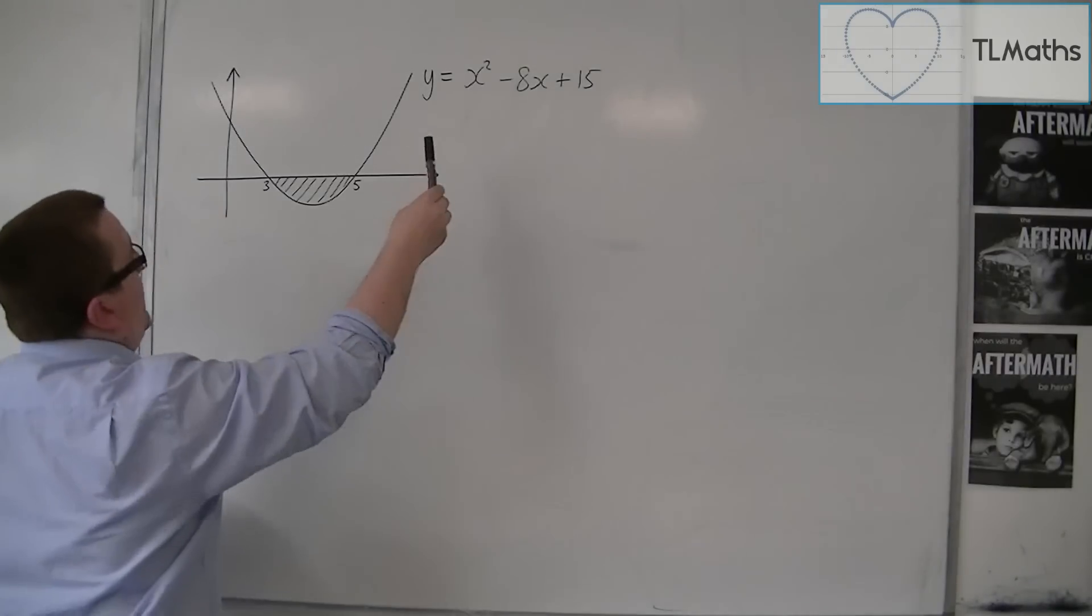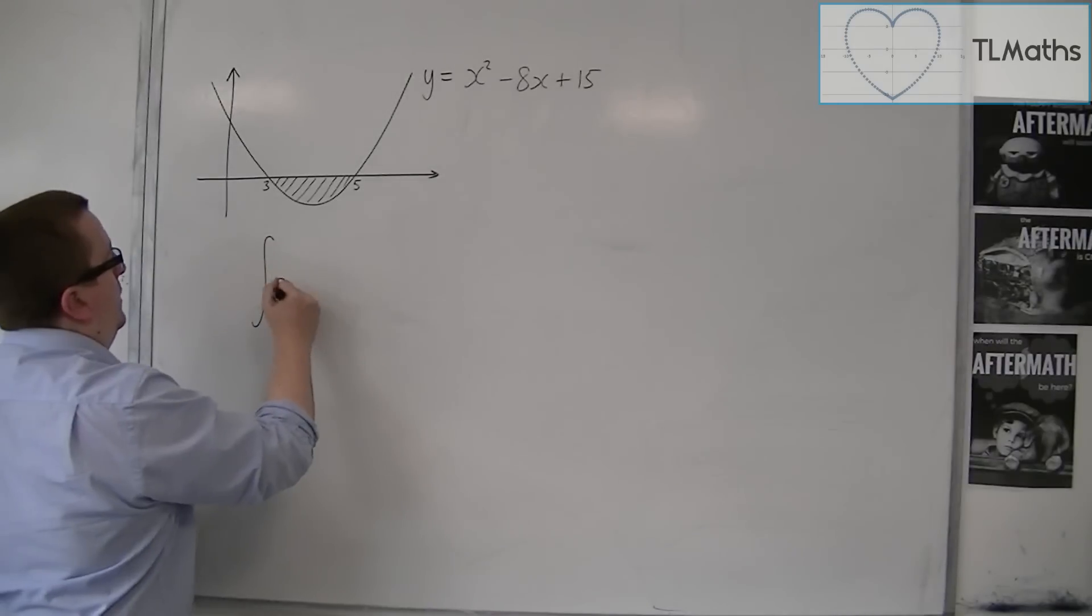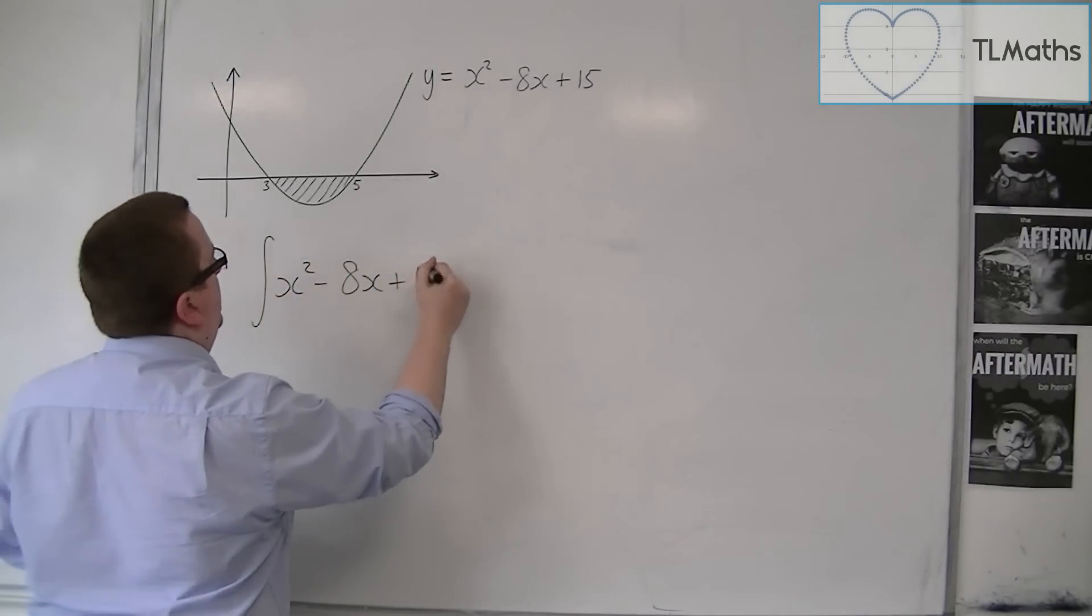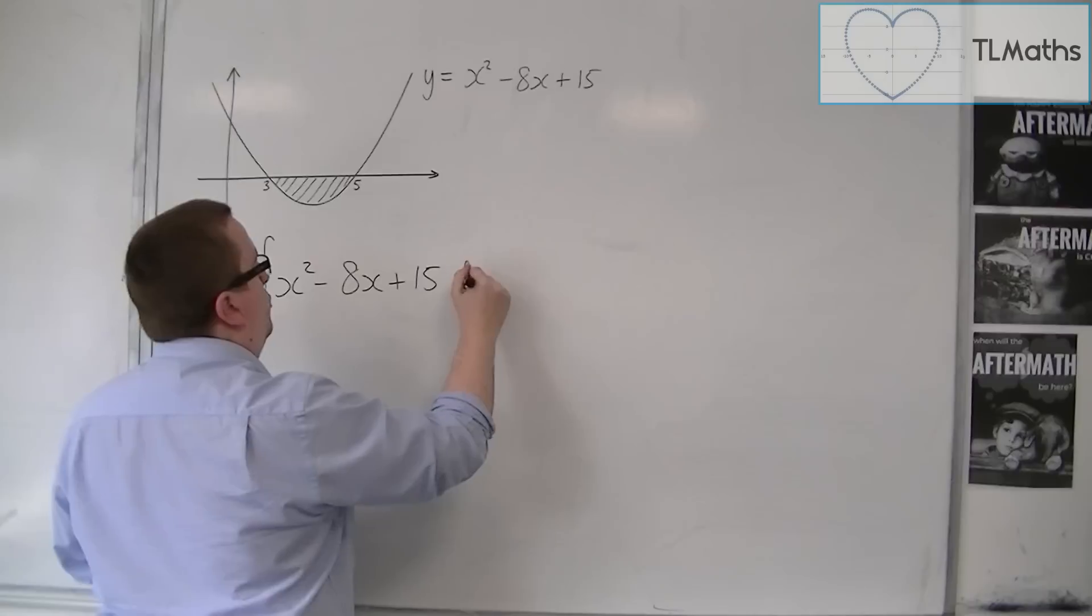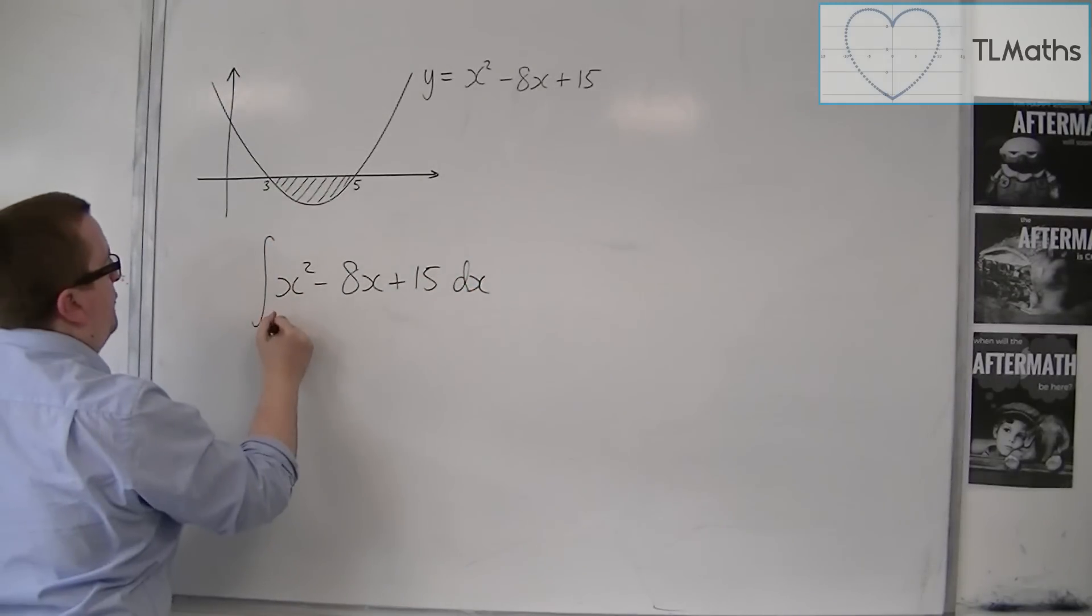So we want to integrate x squared minus 8x plus 15 with respect to x between 3 and 5.